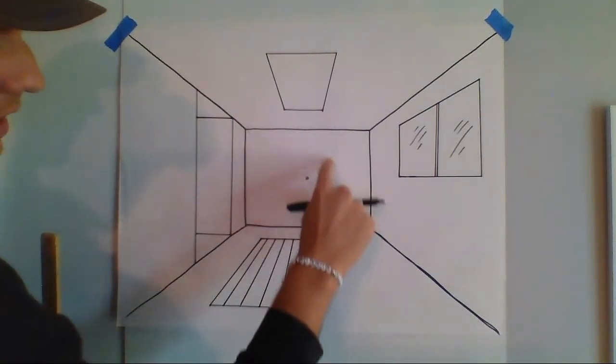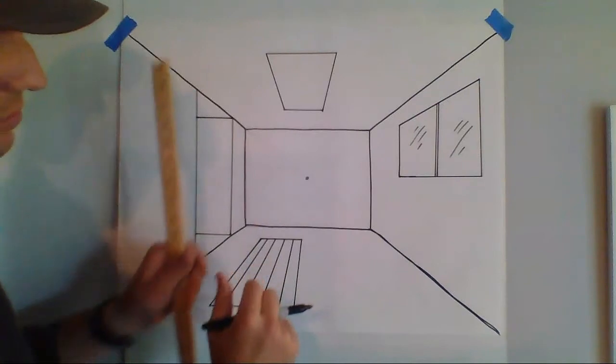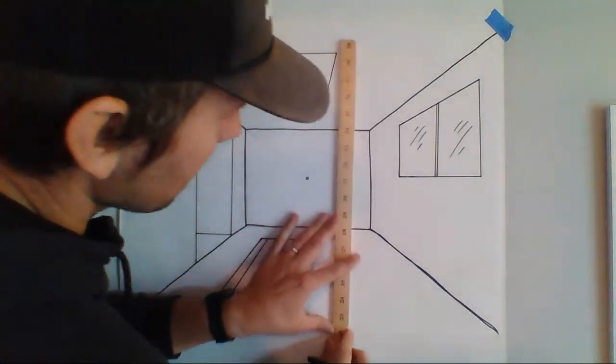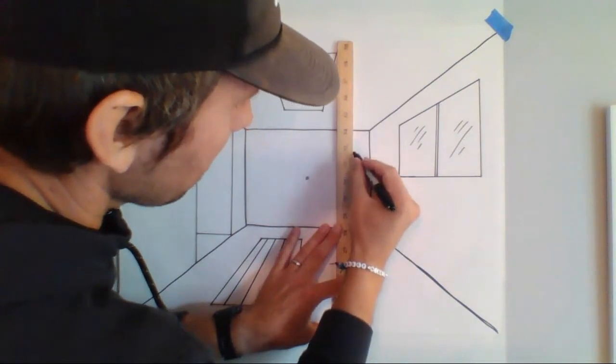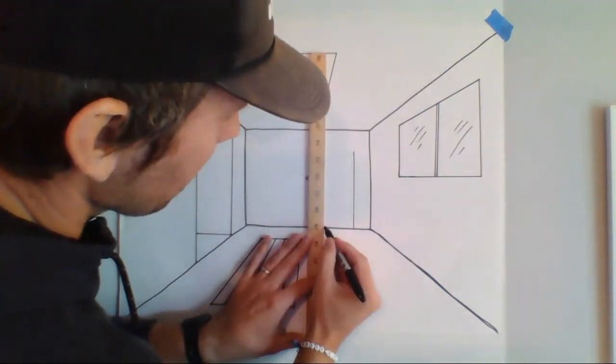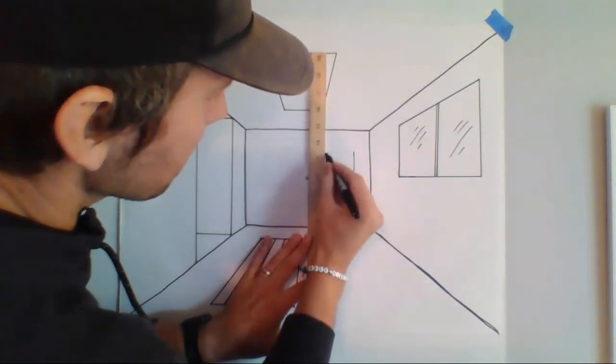So like let's say we want to draw a door to leave this room. I don't know why there'd be a door there, but there is. Most of the time doors are like three quarters of the height of a wall. So there's a door there. Side of the door. Here's the other side of the door. And then we just connect those with a horizontal line.